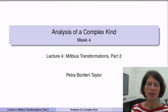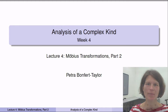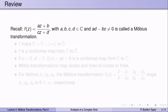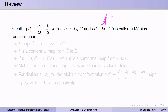Welcome to the second part of our lecture series on Möbius transformations in the fourth week of our course, Analysis of a Complex Kind. Remember that we define Möbius transformations, or fractional linear transformations, as functions of the form (az + b) / (cz + d), where a, b, c, d are complex constants such that ad minus bc is non-zero, which guarantees that f is not constant. These are called Möbius transformations.